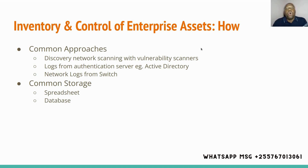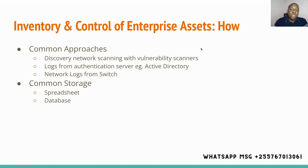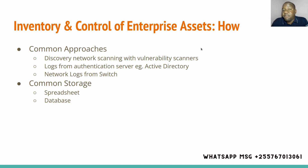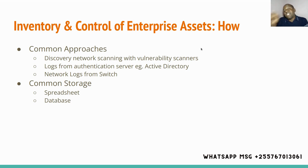There will be logs at the switch level, and if you have that kind of switch you can have the logs to know what devices have been connected to your network. These are some of the common methods one can use for this security control, the first control in our list of CIS Critical Cybersecurity Controls. Now, once you already have this list, where and how do people commonly store this inventory? The idea here is not just to have this inventory — the idea is to have it in a form that you can use it as a reference. The common ways of storing this inventory are through spreadsheets and through databases.